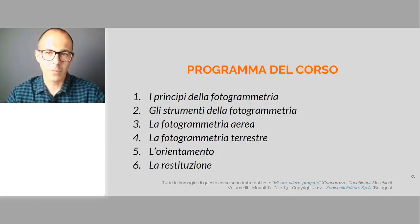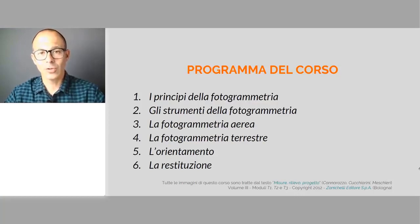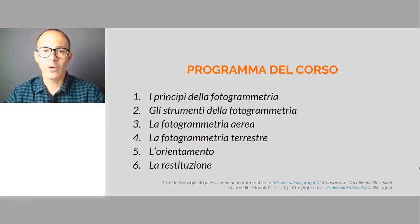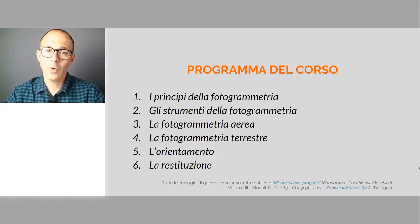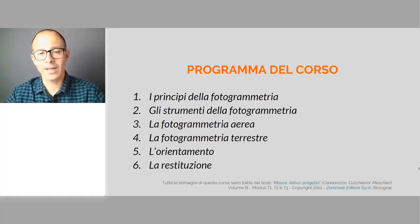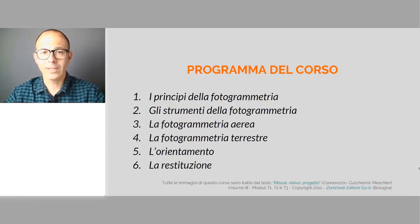Il capitolo 5 e il capitolo 6 riguardano le fasi di trattamento dei dati, ovvero delle immagini acquisite durante la presa fotografica. Il capitolo 5 parla dell'orientamento, il capitolo 6 parla della restituzione, per arrivare a vedere quali sono gli output e i risultati generati dal processo di rilievo fotogrammetrico.